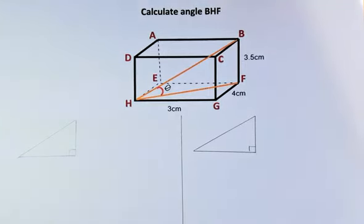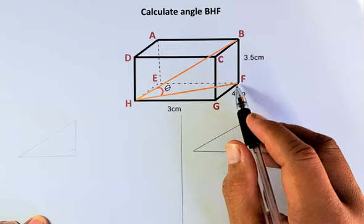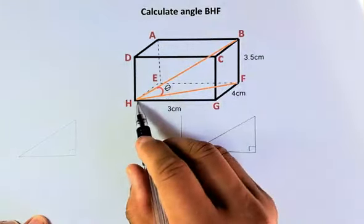So now, before we even find Theta, we need to find the length HF, because we need to have two sides to calculate the angle of Theta. So we need to find the length HF.